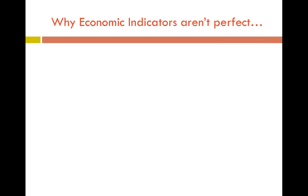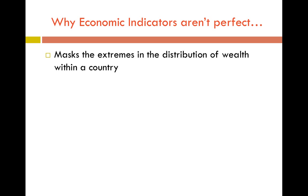So why aren't economic indicators perfect? There's no catch-all for anything, especially in AP Human Geography. These economic indicators mask the extremes in the distribution of wealth within a country. It doesn't show that, even within the United States, you've heard the reference to the 1% — that 1% makes significantly more money than the majority of the rest of the population. However, they're going to skew the average, and that is exactly what happens in a lot of other countries around the world too. The distribution of wealth is not divided evenly among citizens.